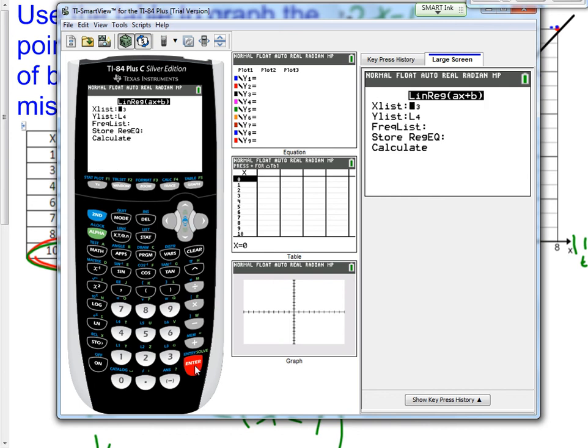Now, we get this. X list, Y list. We want our X list to be what we just put in, which was list 1. So, some of you might have it defaulted there as list 1. If you do not, press 2nd, 1, and there you have it in L1. My Y list, we put our Y values into list 2. So, I'm going to press 2nd, 2, to get it into list 2. Don't do anything with the frequency list or the store regression. Go down to calculate and press enter.